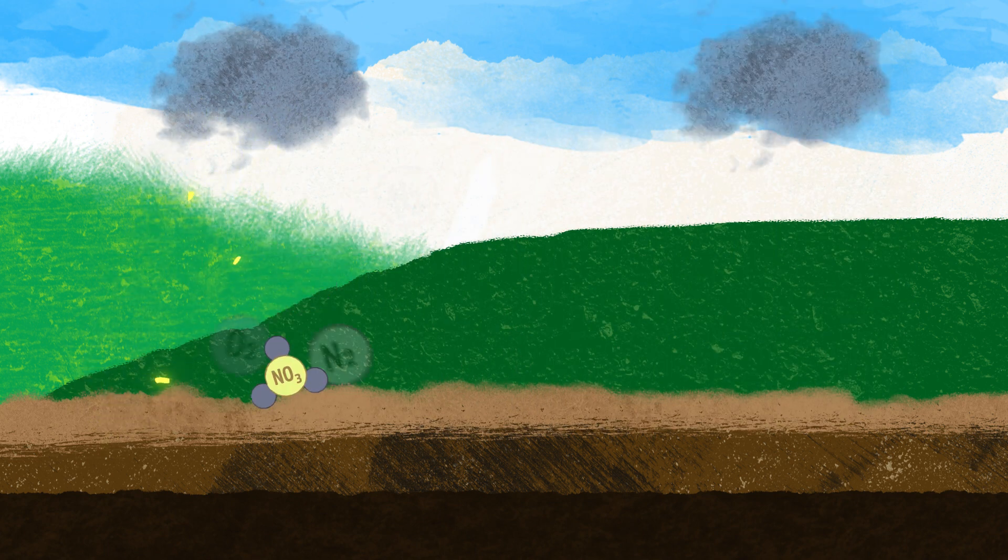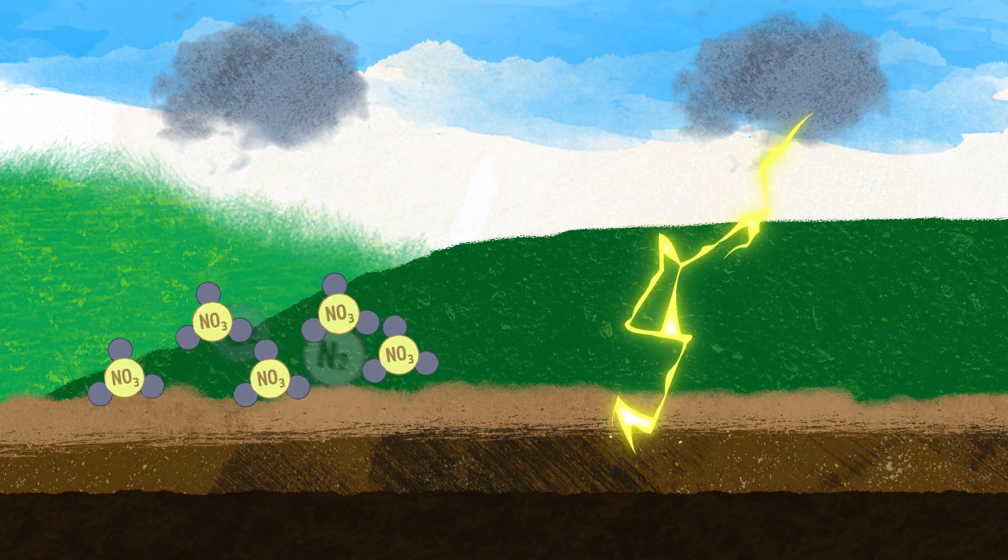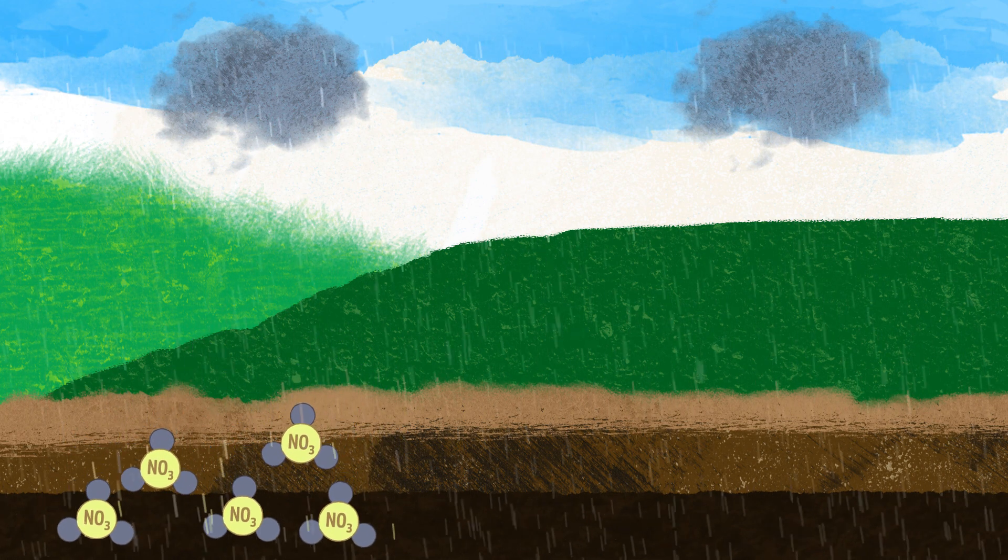Nitrogen can be converted to nitrates by lightning which causes oxygen and nitrogen to react with nitrogen gas. Nitrates dissolve in rainwater and are absorbed into the soil.